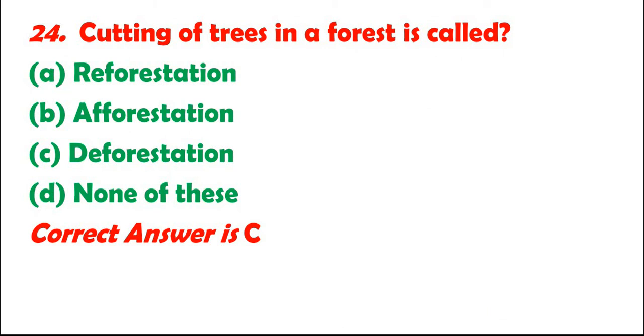Question 24: Cutting of trees in a forest is called: A. Reforestation. B. Afforestation. C. Deforestation. D. None of these. Correct answer is C.